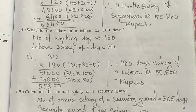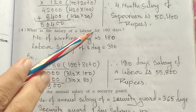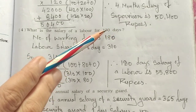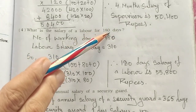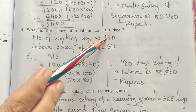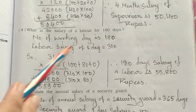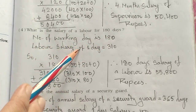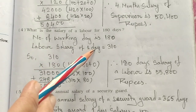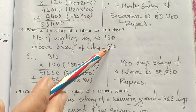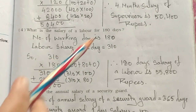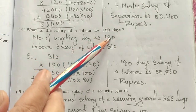Question 4: What is the salary of a labor for 180 days? The number of working days given is 180. The labor's per day salary according to the question is 310 rupees. So we multiply 310 × 180.